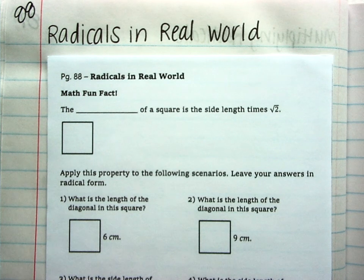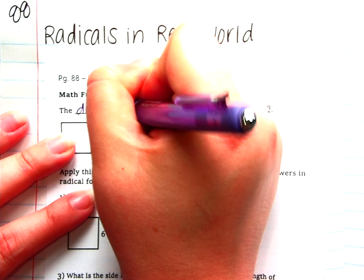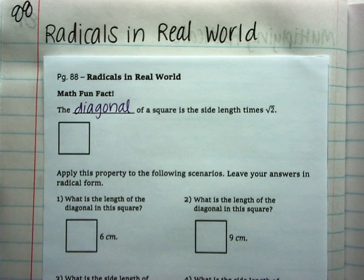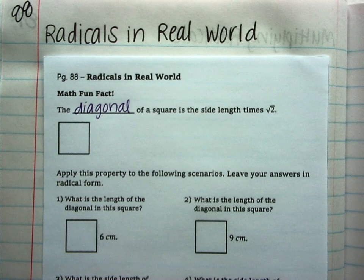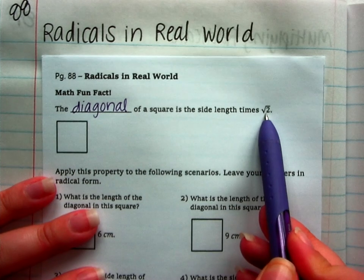So, just wanted to share this math fun fact. The diagonal of a square is the side length times Radical 2. So, Radical 2 is the square root we're going to be working with today.